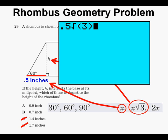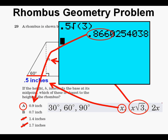So in the calculator, we put in x square root of 3, which is .5 times square root of 3. And that is .866, which is closest to answer A, .9 inches.